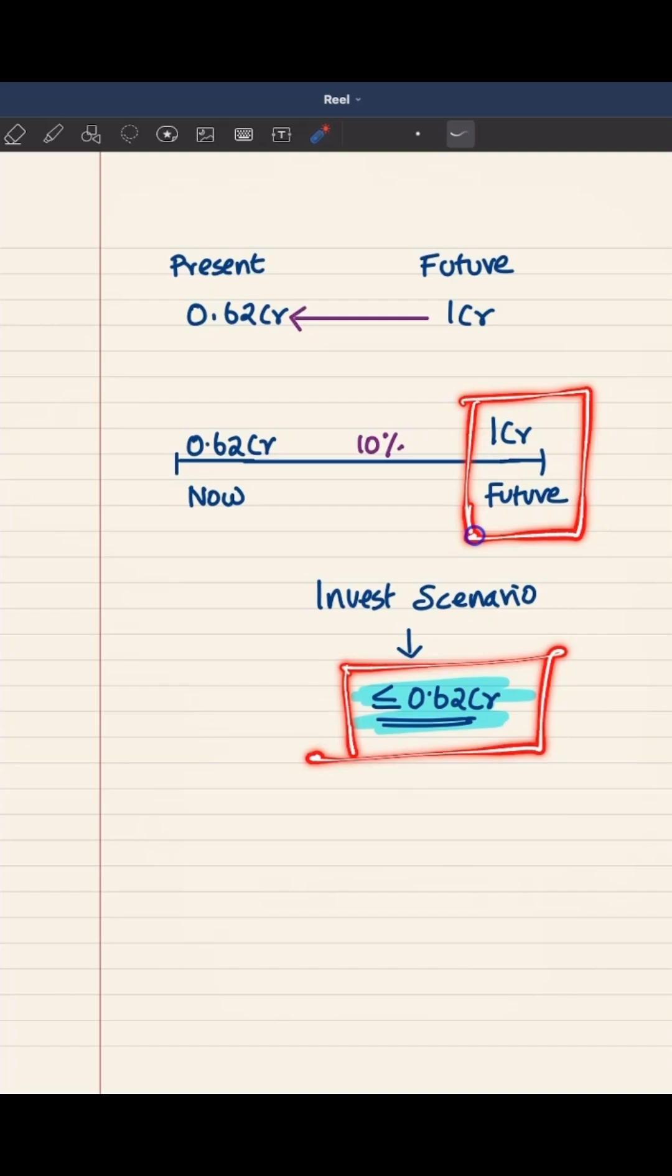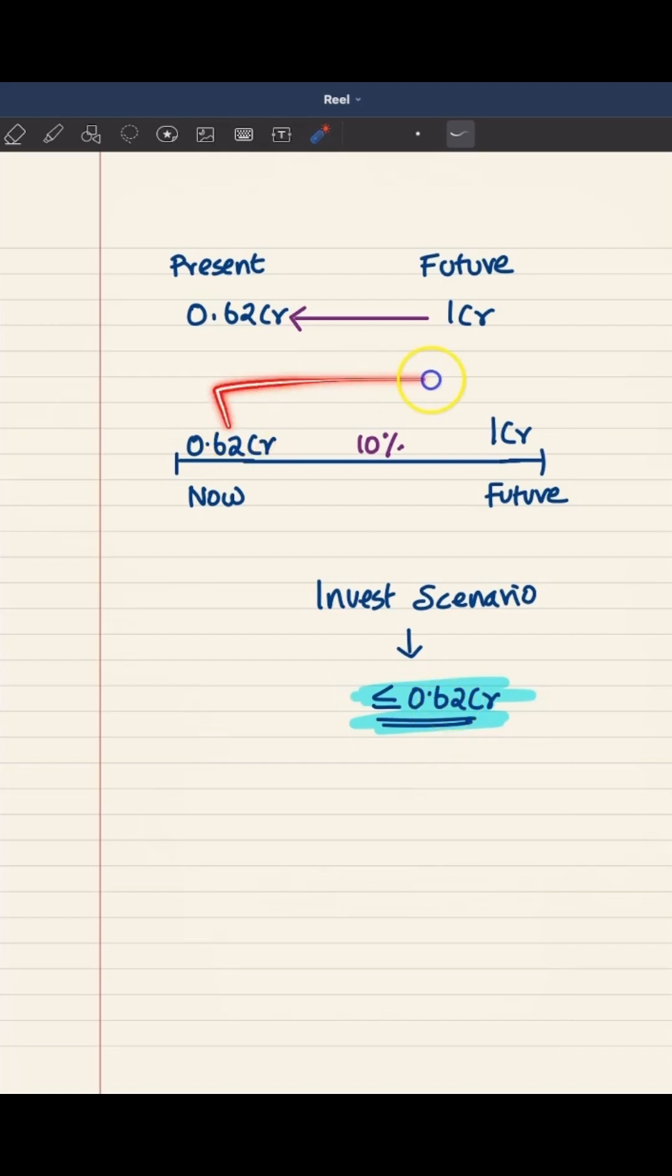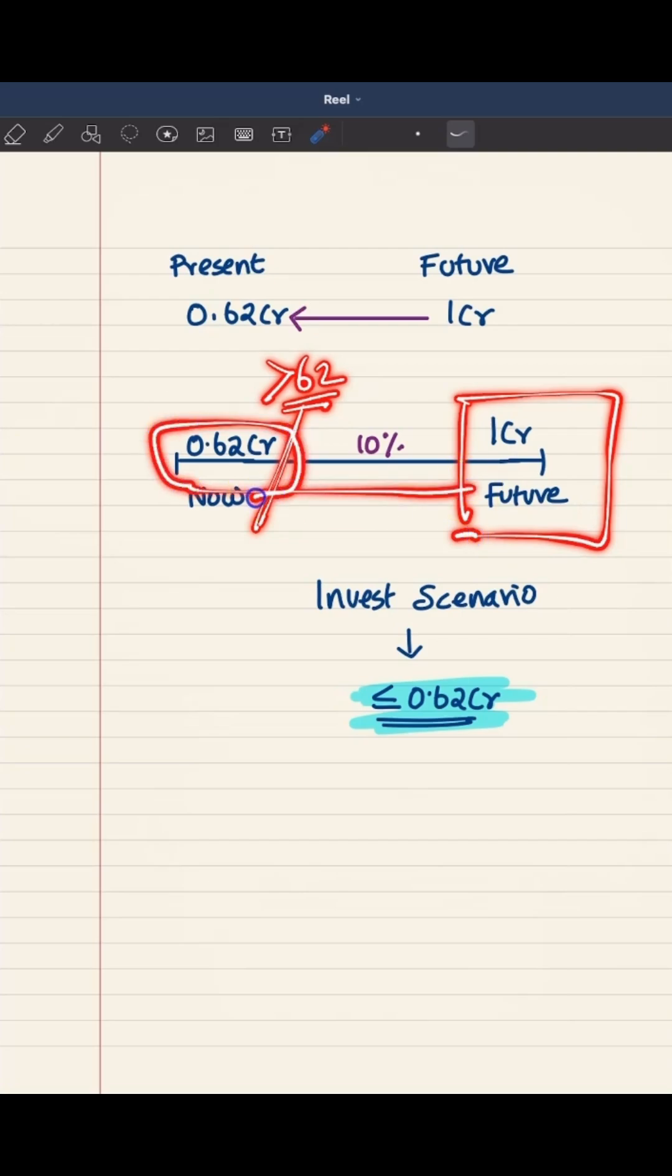In that case, you have to invest only 62 lakh, or if any amount less than 62 lakh is possible, then that. Because this investment will max fetch only 1 crore. So here, if you are going to invest any amount greater than 62 lakhs, you will be losing because your future value is fixed here.